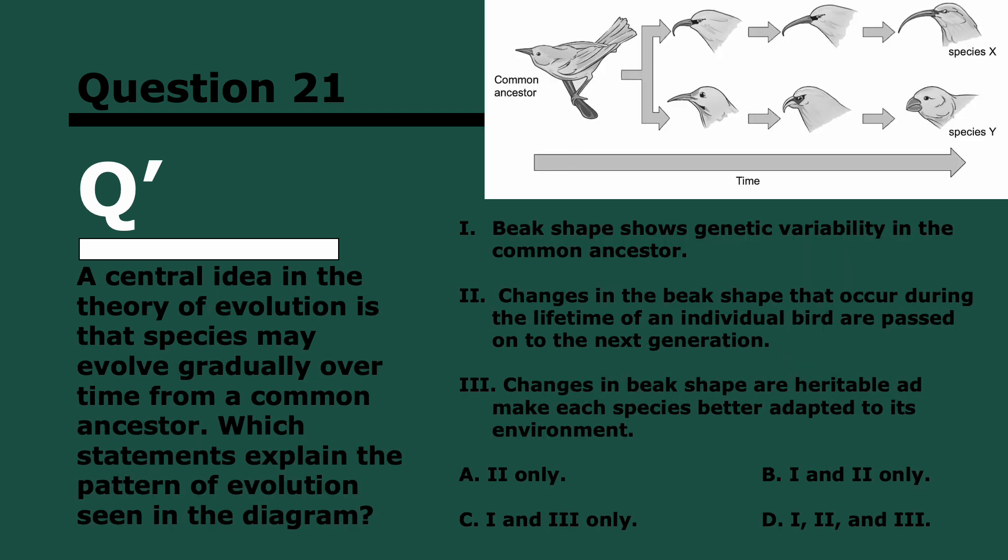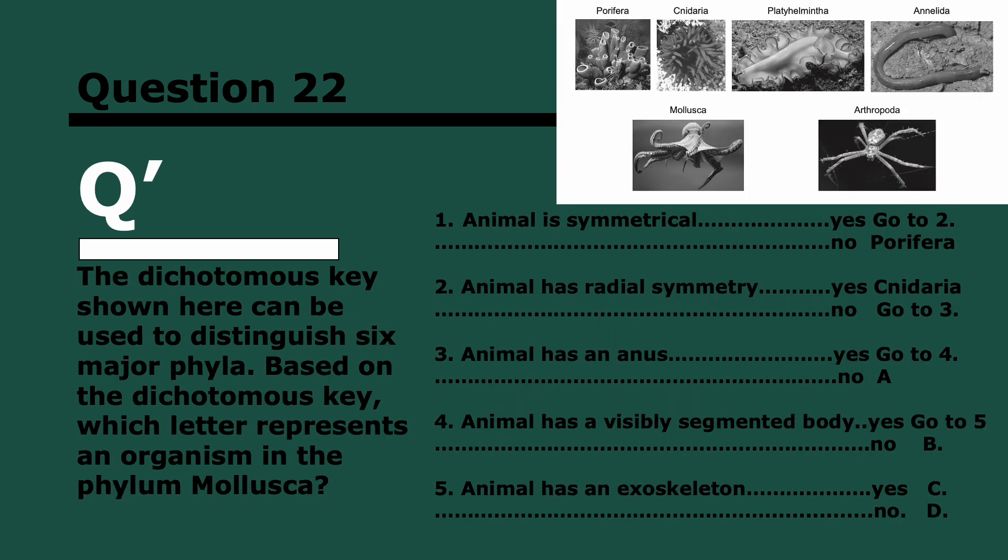Question 21, which was also in higher level. A central idea in the theory of evolution is that species may evolve gradually over time from a common ancestor. Which statements explain the pattern of evolution seen in the diagram? Three, two, and one. One and three. Why not two? Because changes that happen throughout the lifetime of an individual are not heritable. If you get a wound, that's not passed on to your kids. However, there's always genetic variability in a common ancestor between different members of a species. And changes in beak shape that are genetic are heritable. So it's one and three.